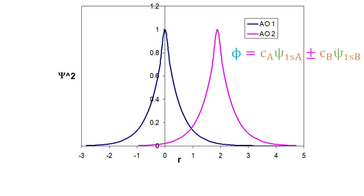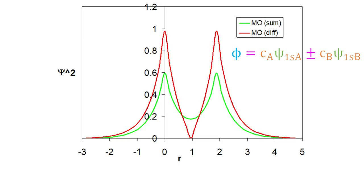Let's see what these MOs look like. Here's a plot of psi-star psi for the two separate 1s atomic orbitals, imagining the two atoms are separate — not actually bonded together, as though each atom was invisible to the other one. One nucleus is located at x equals zero, and the other one is centered here. Now let's imagine the two atoms can suddenly see each other, so the atomic orbitals will combine to form a molecular orbital. Here's what we get. We combine the two atomic orbitals by either taking the sum or the difference. The green curve represents the sum.